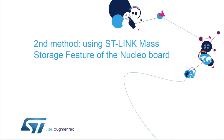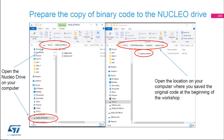Now it's time for the second method: the ST-Link mass storage feature. When you connect your board — your Nucleo board — it is also recognized as a mass storage device. What you can do is drag and drop a binary (.bin) file to this drive, and that will re-flash the STM32 on the Nucleo board. In this case, we're going to re-flash the internal flash of the STM32G0.